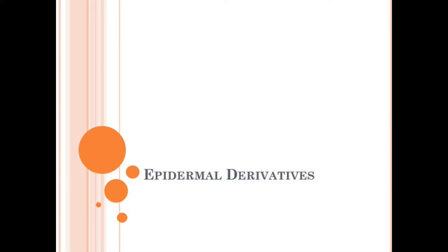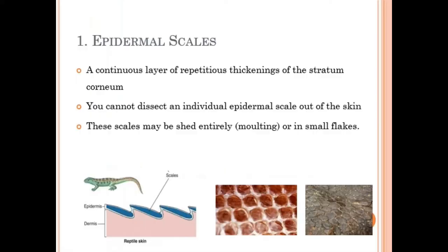First, we will discuss epidermal derivatives derived from the epidermis layer. The first is scales. In reptiles, scales are epidermal in origin — they are a continuous layer of repetitious thickening of the stratum cornea. Multiple layers in one place form a scale. These scales cannot be dissected as individual epidermal scales; it is a single continuous layer that looks like scales. These scales may be shed entirely during molting, or in small flakes. For example, snakes shed their skin, which is essentially just the layer of scales.